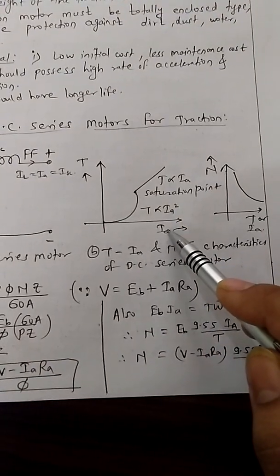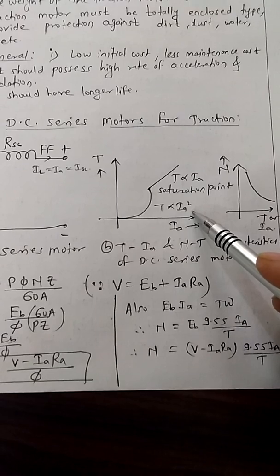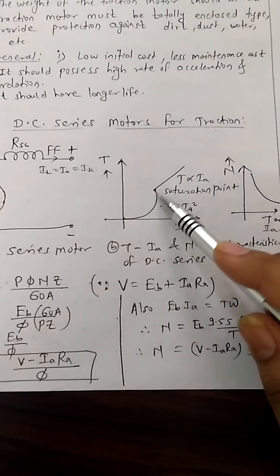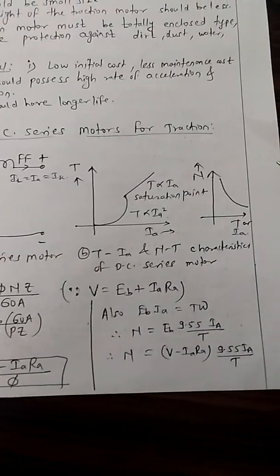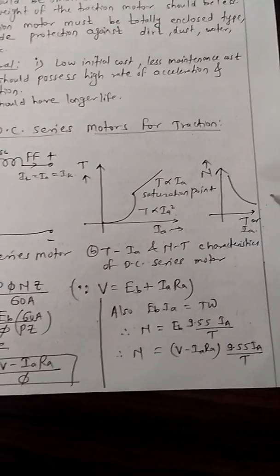Torque-armature characteristics are non-linear. Initially torque is directly proportional to square of the armature, and then after saturation point it is linearly proportional. Speed-load characteristic or speed-torque characteristic is again non-linear.